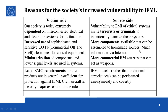More components are available that can be assembled into homemade sources. Even a microwave oven has a powerful microwave source which, coupled with antennas, can be made into a crude electromagnetic weapon. There is a lot of information on the internet and expertise is widely available. Even commercial high-power EM sources such as used radars are freely available and can be converted into weapons. This availability, combined with the anonymity of IEMI attacks, makes these methods more attractive to criminals.